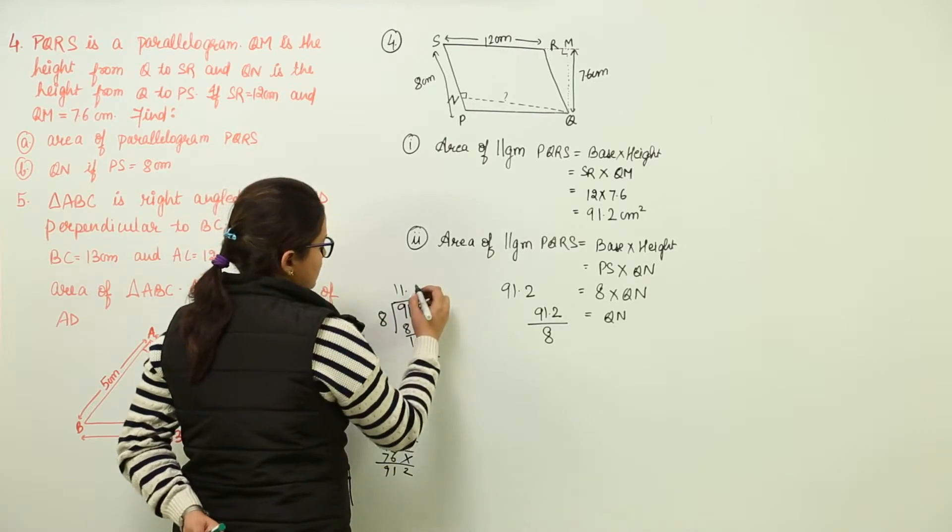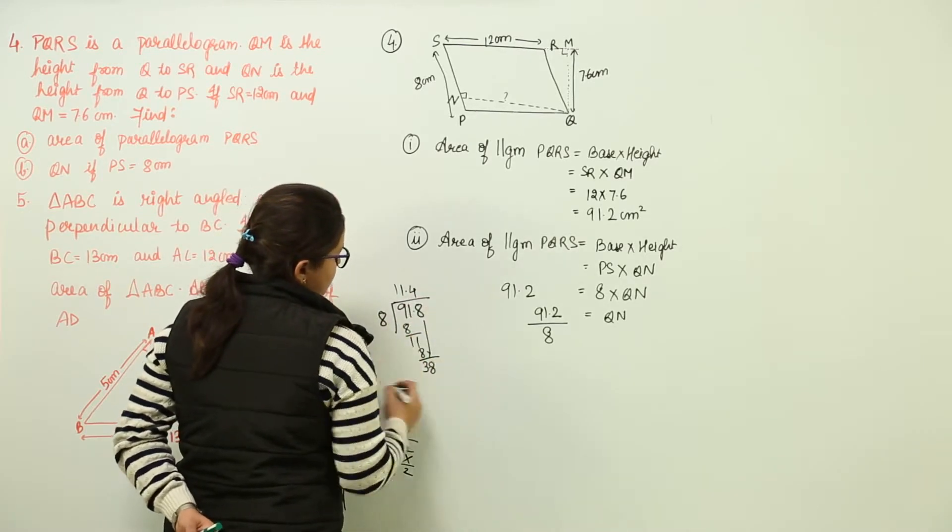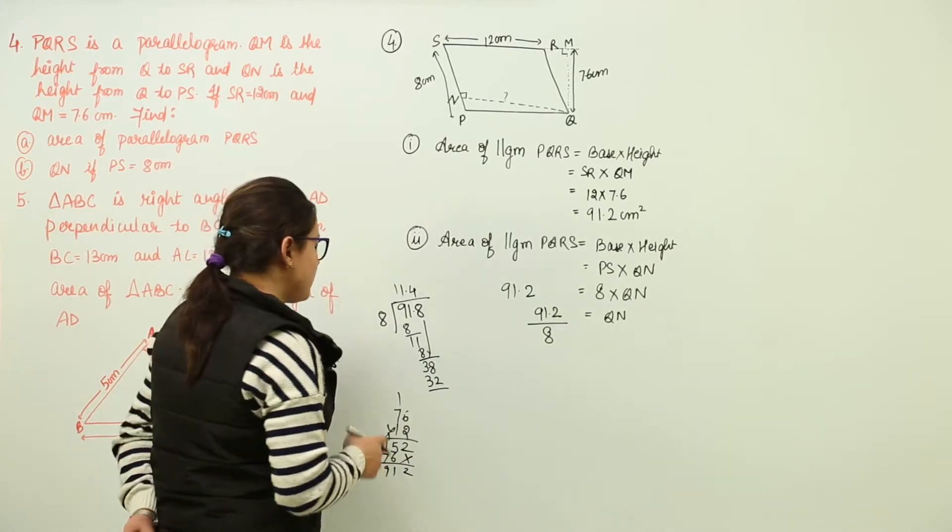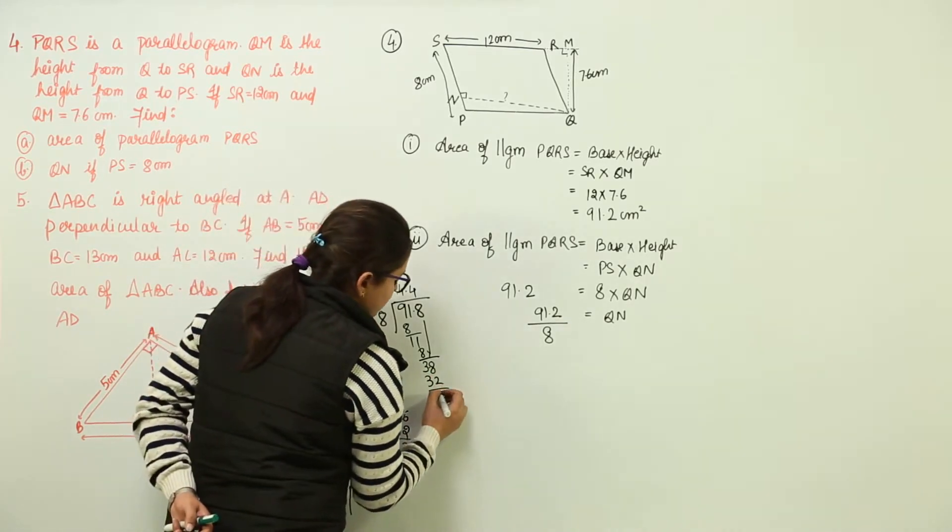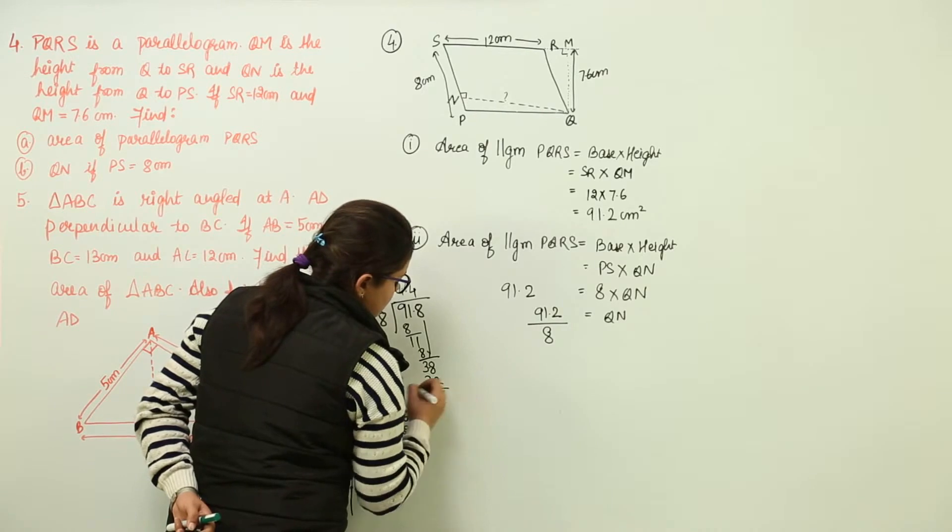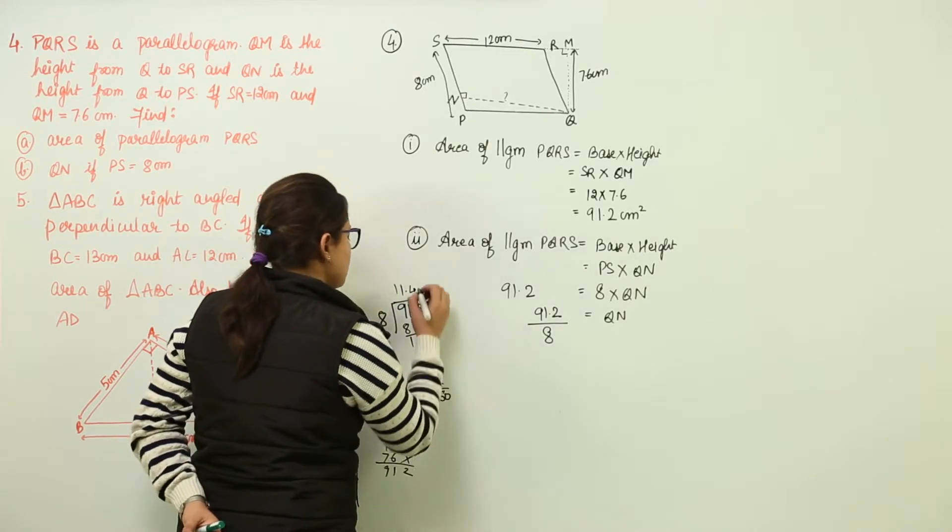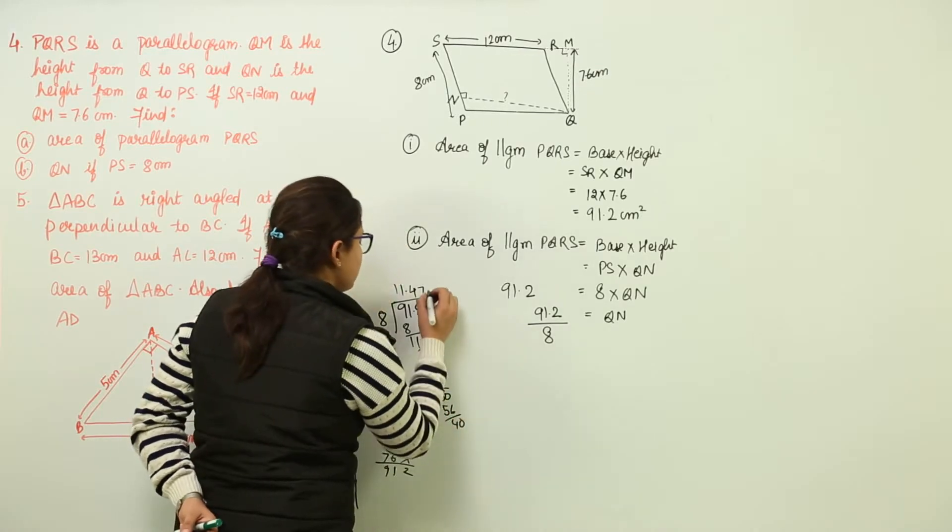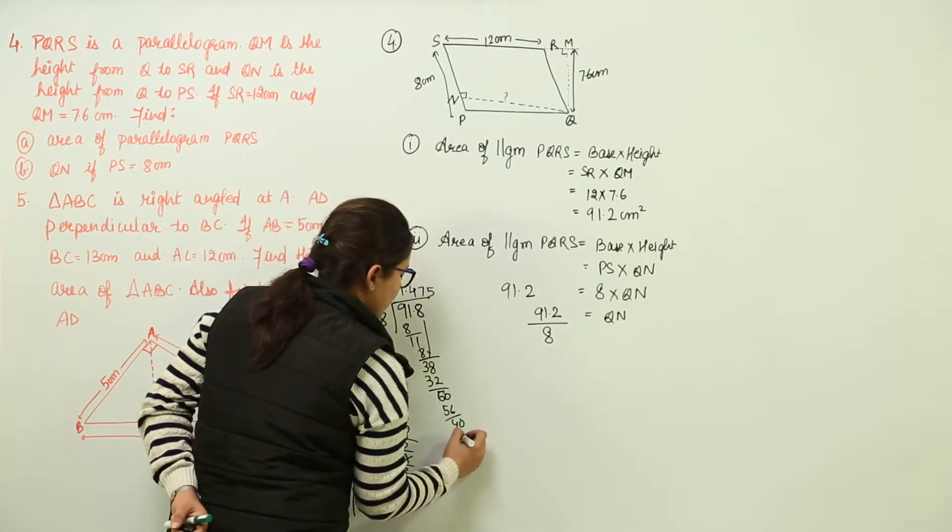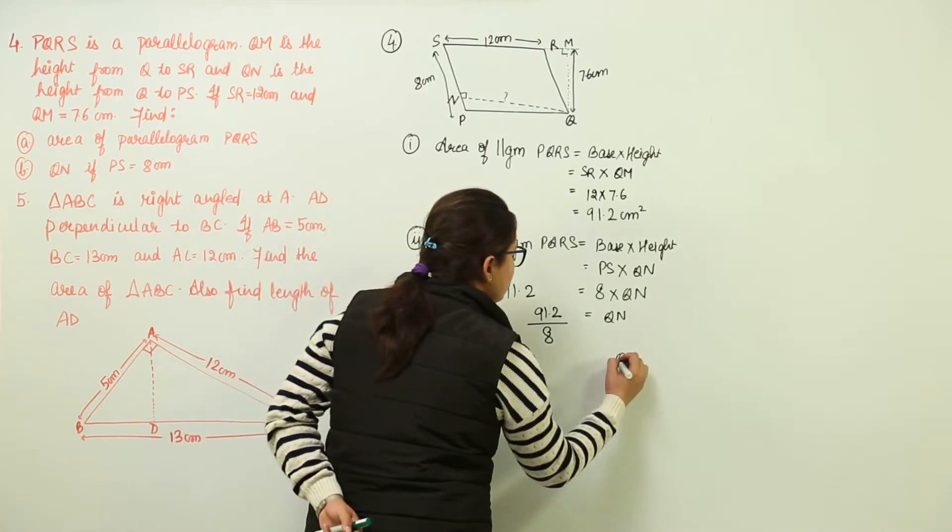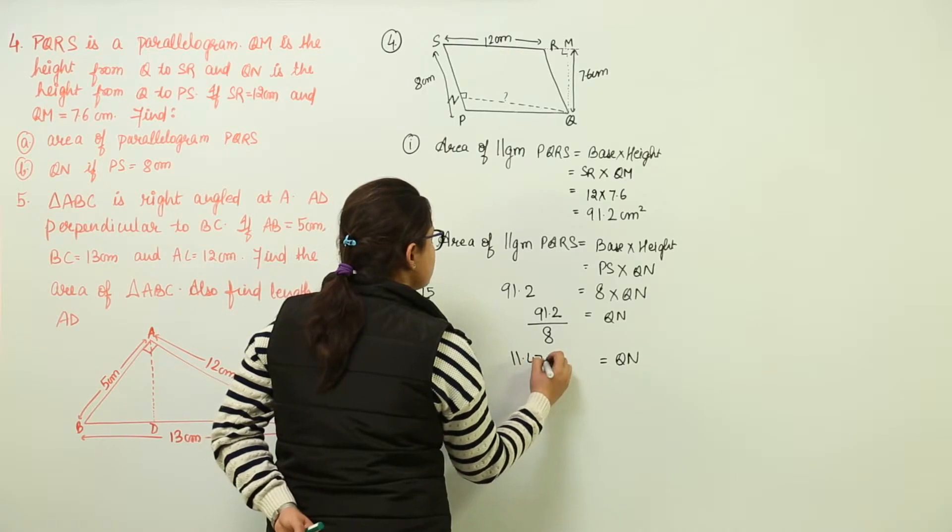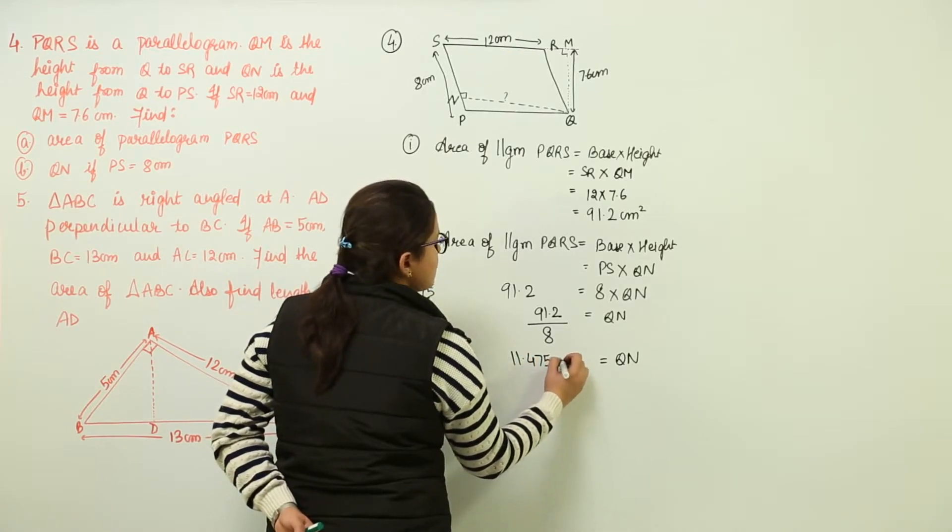8 4s as 32. 8 5s will become 40. That will be greater than this. So the value of QN is going to be 11.475 centimeters.